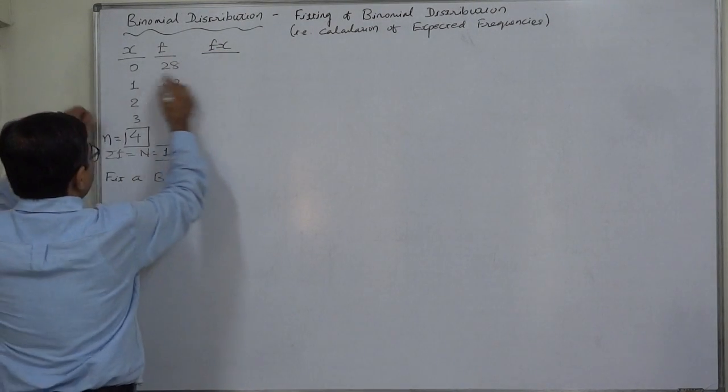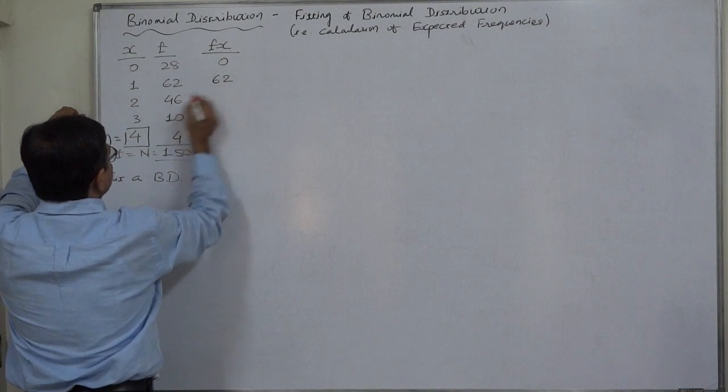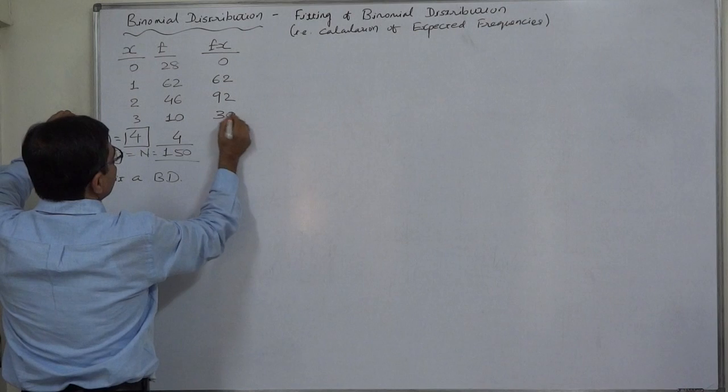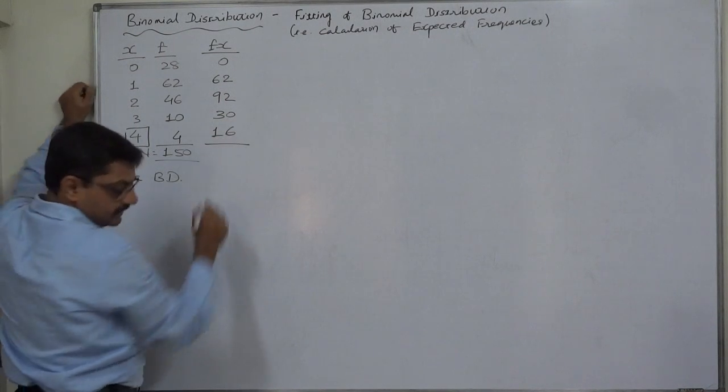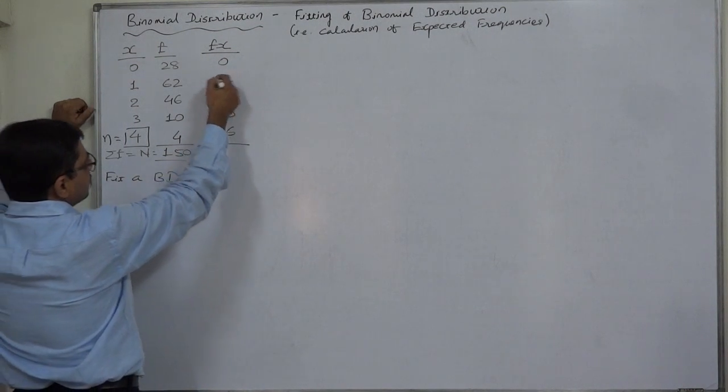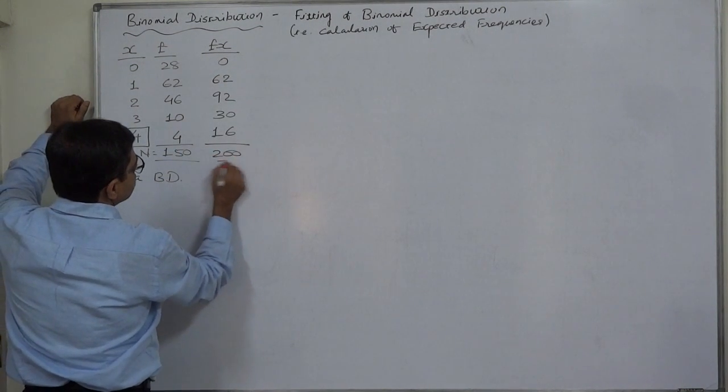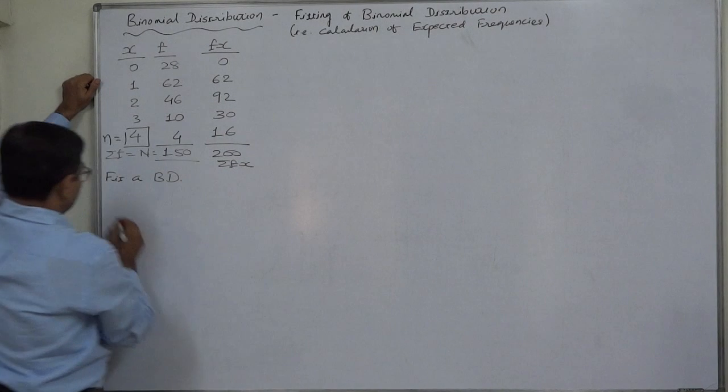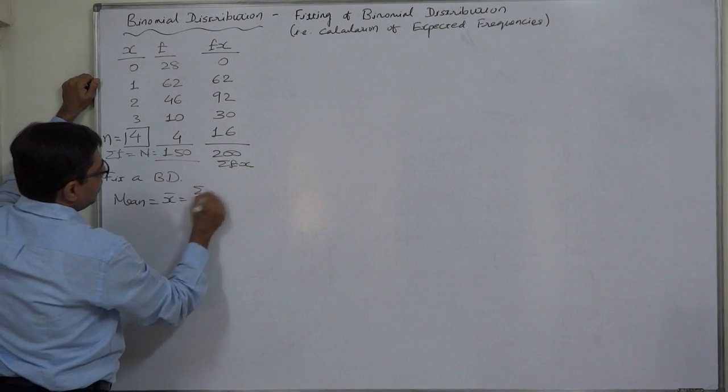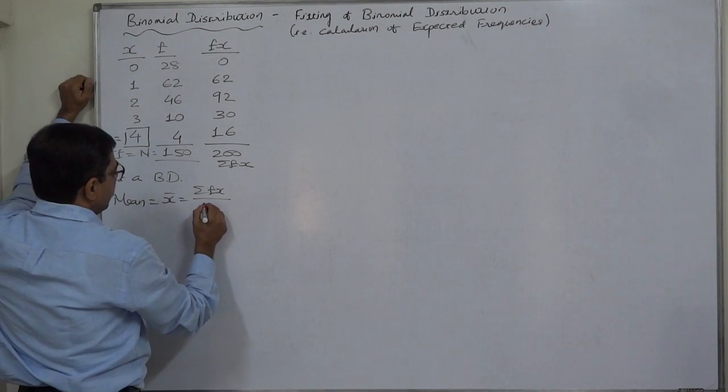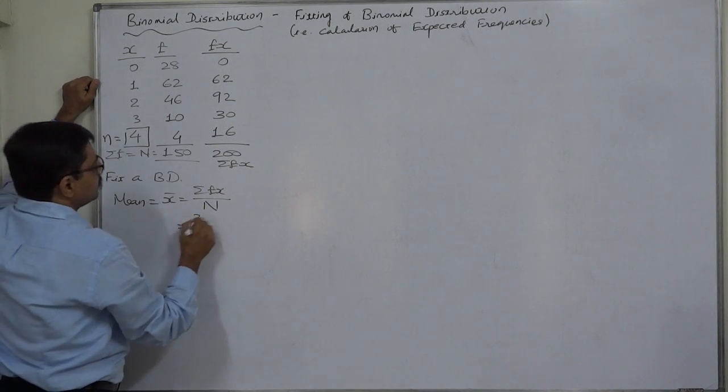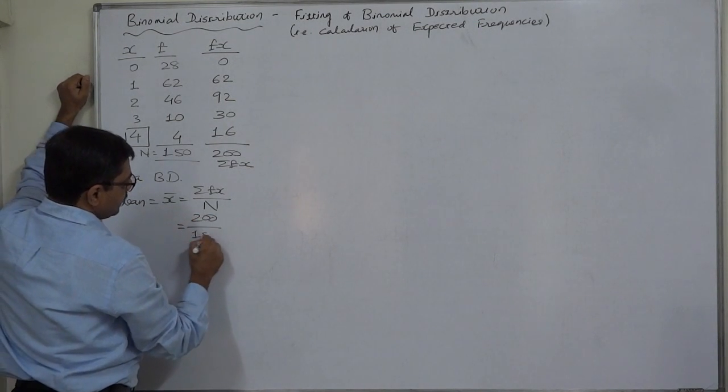We should have fx: 0 into 28 is 0, 1 into 62 is 62, 2 into 46 is 92, 3 into 10 is 30, 4 into 4 is 16. The summation comes to 200. This is sigma fx. Now we can have mean equals to sigma fx divided by capital N or sigma f. Here, 200 divided by 150.